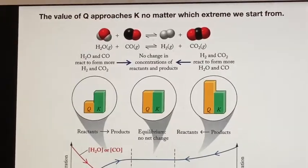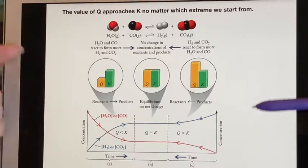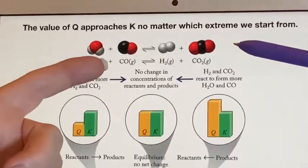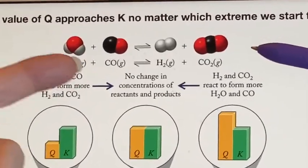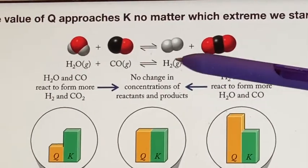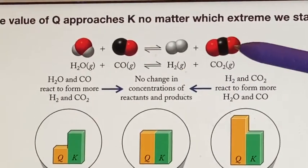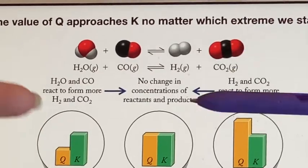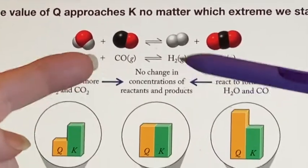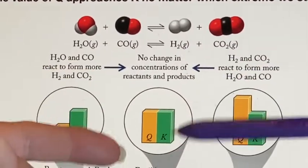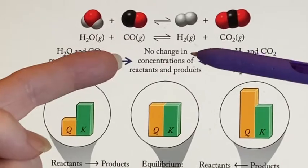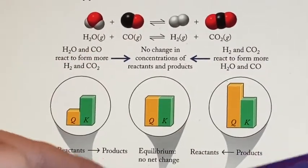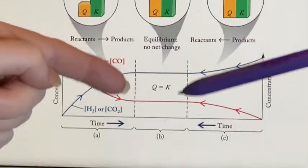Here is an example. If we have a reaction where water and carbon monoxide are combining to form hydrogen gas and carbon dioxide, and we were already at equilibrium, there would be no net change in the concentrations. In that case, Q is the same as K.